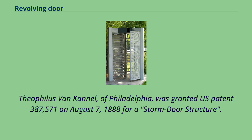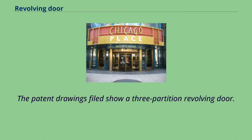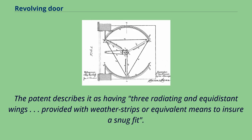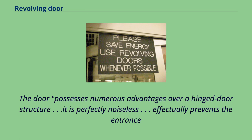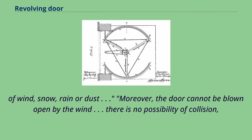Theophilus Van Kennel of Philadelphia was granted U.S. patent 387571 on August 7, 1888, for a storm door structure. The patent drawings filed show a three-partition revolving door described as having three radiating and equidistant wings, provided with weatherstrips or equivalent means to ensure a snug fit. The door possesses numerous advantages: it is perfectly noiseless, effectually prevents the entrance of wind, snow, rain, or dust. Moreover, the door cannot be blown open by the wind and there is no possibility of collision.